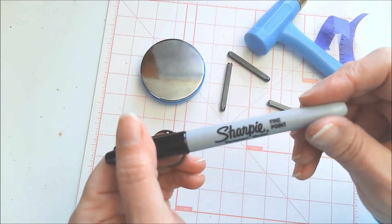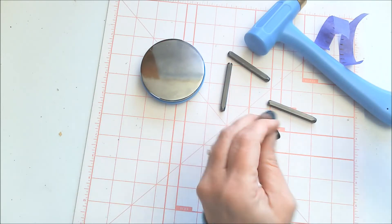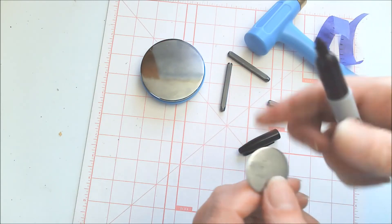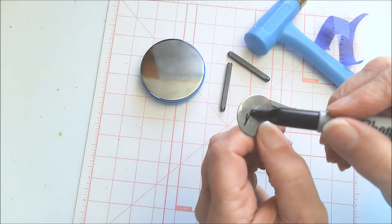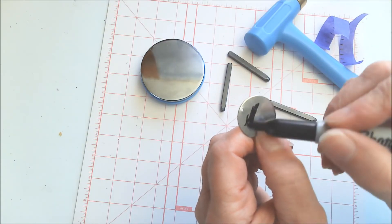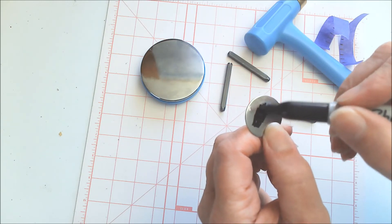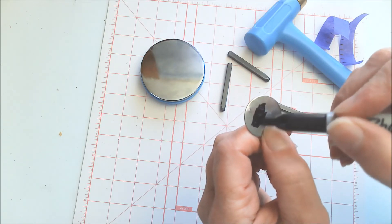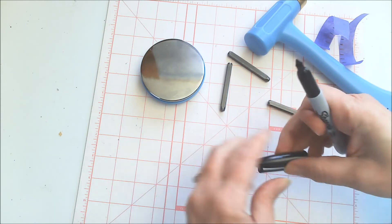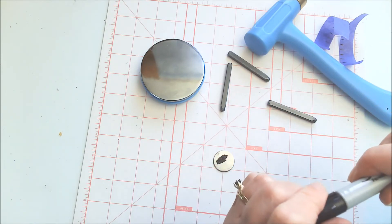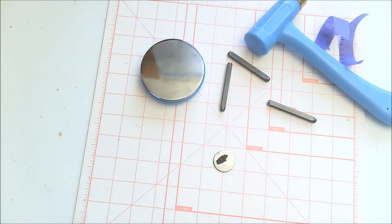Next we're going to take a Sharpie and go right across those letters because we want this black to get down inside. Okay, now I'm going to let that sit a minute and I'm going to go grab an alcohol wipe to wipe that off.